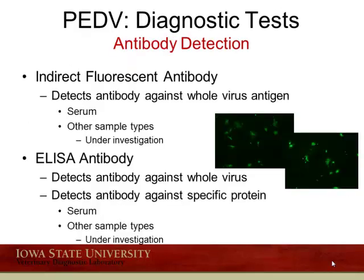Antibody detection assays or serological tests available started with the indirect fluorescent antibody assay detecting antibody against a whole virus antigen, which was used initially for serum samples and other sample types under investigation. We also have ELISA antibody tests available, which are somewhat easier to use than the IFA test, detecting antibody against either the whole virus as antigen or against a specific protein based on the diagnostic question of interest.